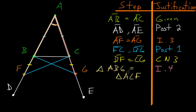Once we establish that triangles ABG and ACF are equal, we can conclude several things. Angle AFC equals angle AGB, and angle ABG equals angle ACF. We also know that since the triangles are equal, their bases are equal — line BG equals line FC.